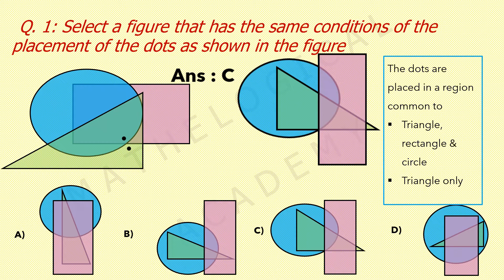In option C, we have a region which is common to rectangle, triangle and circle, and yes, there is also a region which lies only in the triangle. In option D, the common region exists for all three figures but there is no region that is only in the triangle, because the triangle is inside the circle. So our answer is option C.